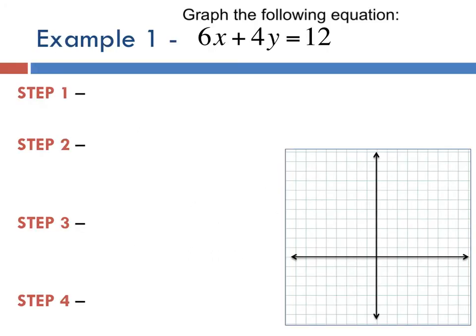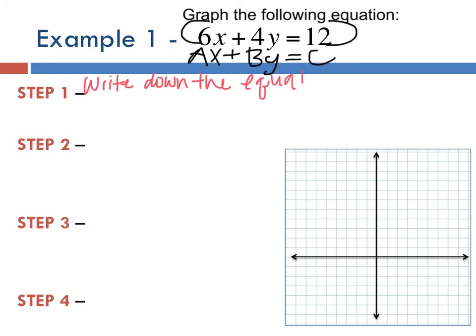Now we're going to get into what the essential question was asking for: being able to graph something from standard form. This equation up here, 6x + 4y = 12, is standard form because you have Ax + By = C. Step 1 is write down the equation. Write it down on your own piece of paper: 6x + 4y = 12.